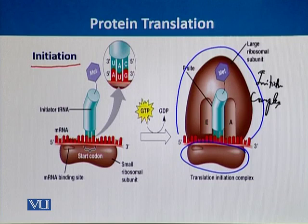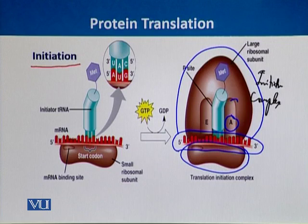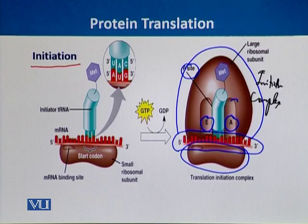The initiation complex is the first step in protein synthesis. After this complex is formed, the molecule of messenger RNA binds with the smaller subunit. The larger subunit of the ribosome has three specific sites: the A site (acceptor site), where transfer RNA first comes and binds; the P site; and the E site (exit site). The transfer RNA that has bound at the A site moves to the P site and finally exits from the E site.